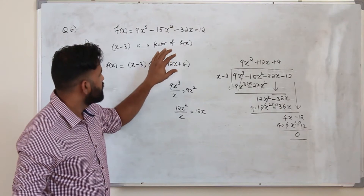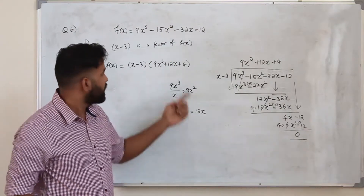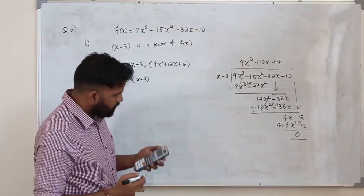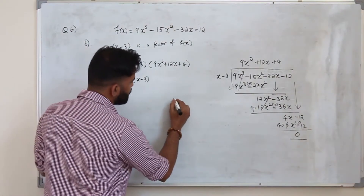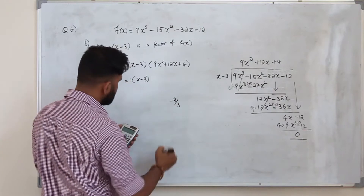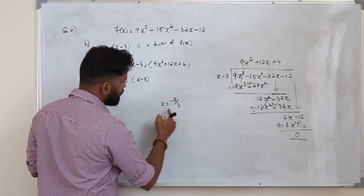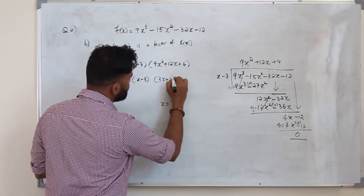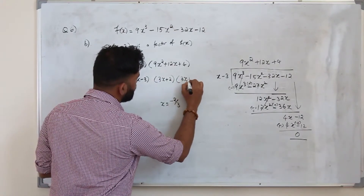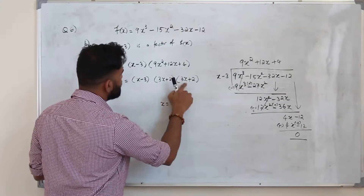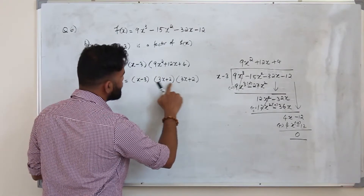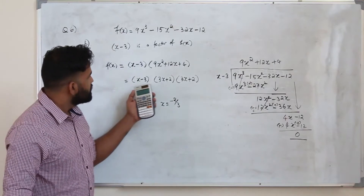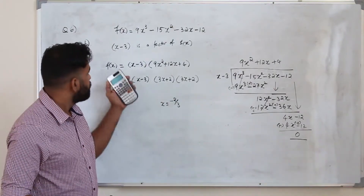They want you to fully factorize, so do not stop at one factor — factorize the quadratic 9x squared plus 12x plus 4 as well. Using a calculator, the roots are x equals minus 2 over 3 (repeated). So the factors are 3x plus 2 times 3x plus 2. Multiplying gives 9x squared plus 12x plus 4, confirming the fully factorized form: x minus 3 times (3x plus 2) squared.